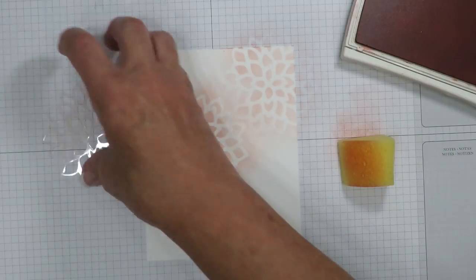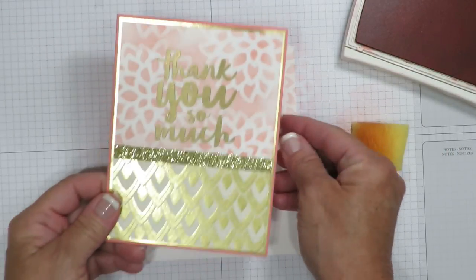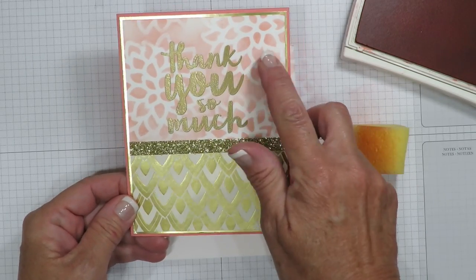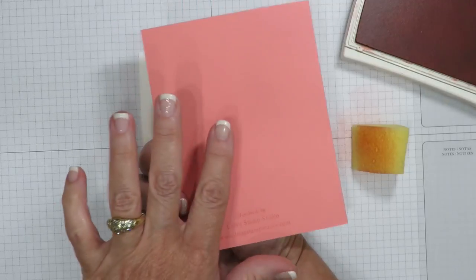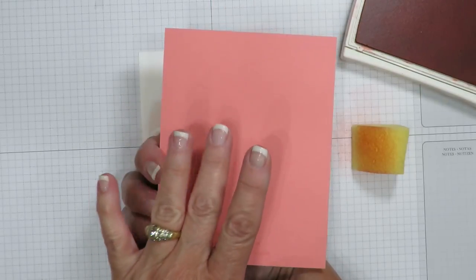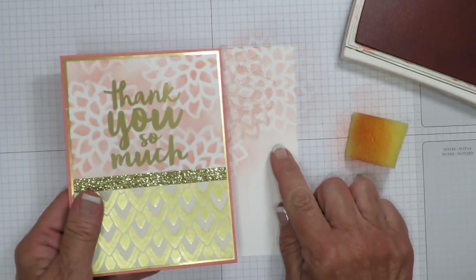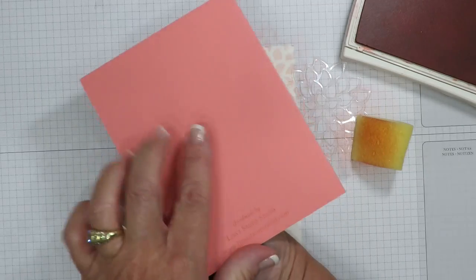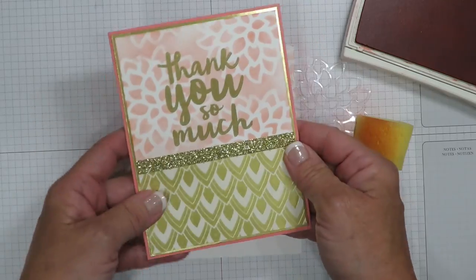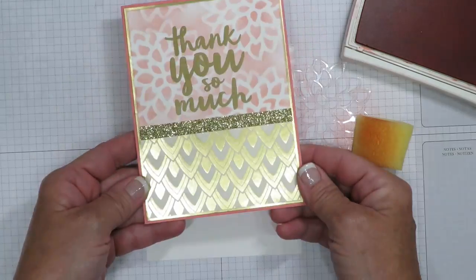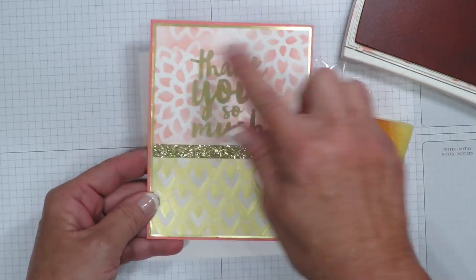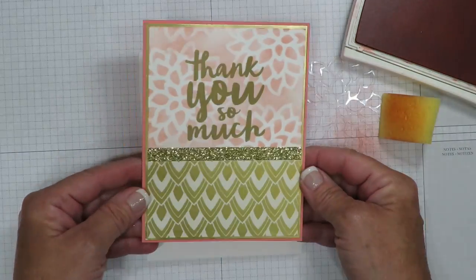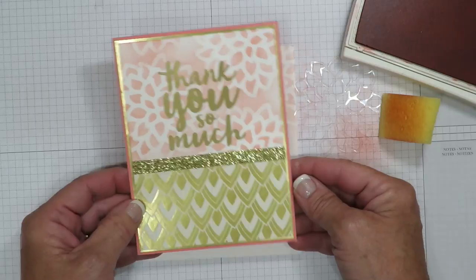Alright here's my finished card using this exact same stencil. Isn't that striking? Alright so this is Calypso Coral but are you ready? I actually ended up mounting it on Flirty Flamingo cardstock. It turns out that the sponging is just a shade lighter and it coordinated with this so well. And I just used some of the Eastern Palace Designer Series Paper and Gold, Glimmer Paper, Gold Foil and of course I embossed my words in gold. A really simple card but so striking.